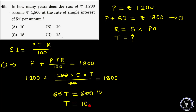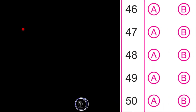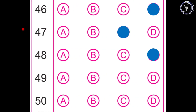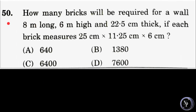That means the principal amount Rs.1200 will become Rs.1800 at the rate of simple interest of 5% per annum in 10 years. Therefore, answer option A — 10 — is the correct answer. Let us mark it on the OMR answer sheet. Answer option A is the correct answer for question number 49. Let us move to the next question.